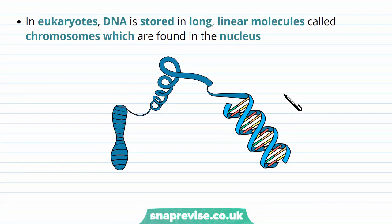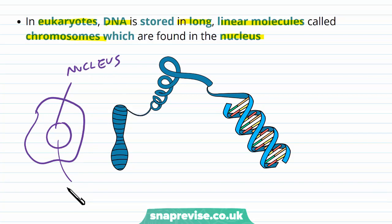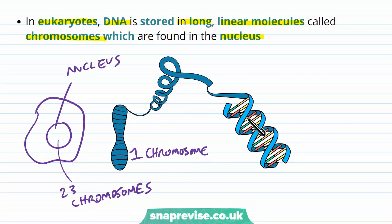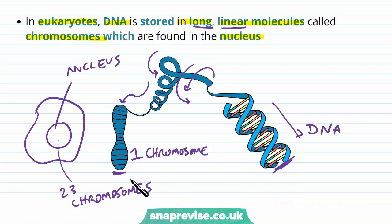For prokaryotes and eukaryotes, the storage of DNA is slightly different. In eukaryotes, DNA is stored as a continuously long, linear molecule — we call these chromosomes — and they are found in the nucleus. In a human cell, the nucleus contains 23 chromosomes. A chromosome is lots and lots of DNA wound and compacted around itself — like a piece of string wrapped around itself again and again — until all that DNA is packaged into a chromosome. If you were to unravel it, you'd get just a long strand of DNA. We call it linear because it goes from one end to the other; it doesn't join up into a circle.